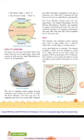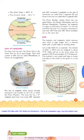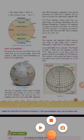The prime meridian divides the earth into two equal halves: the Eastern Hemisphere and the Western Hemisphere. Just as the equator divides the earth into the Northern Hemisphere and the Southern Hemisphere.